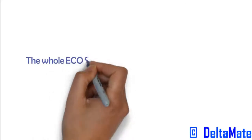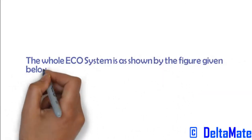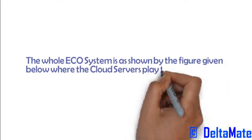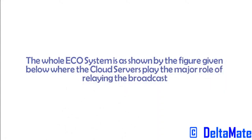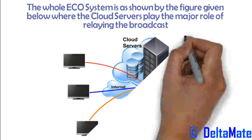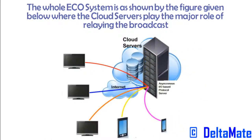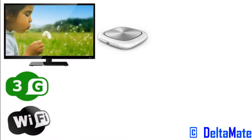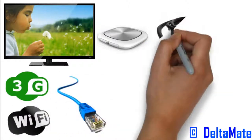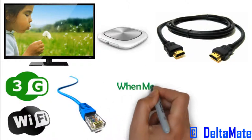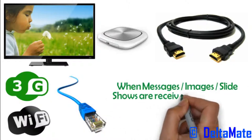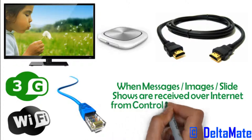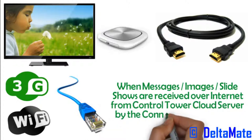The whole ecosystem is as shown by the figure given below, where the cloud service plays the major role of relaying the broadcast content securely across the connected devices over the Internet. A smart connectivity box is provided which connects to TVs and supports 3G or Wi-Fi wireless, Ethernet LAN, and HDMI. When messages, images, and slideshows are received over the Internet from the Control Tower cloud server by the connectivity box,